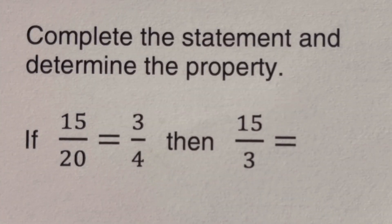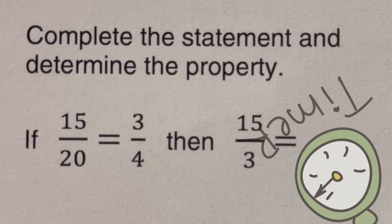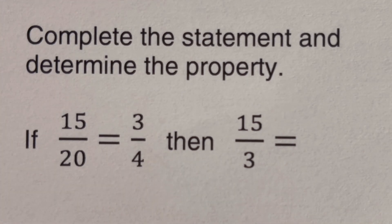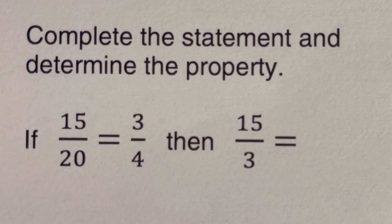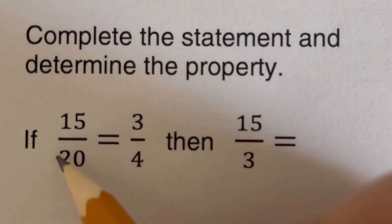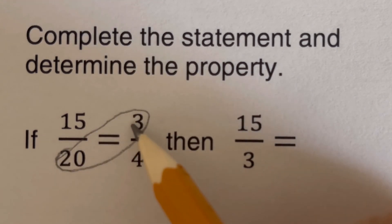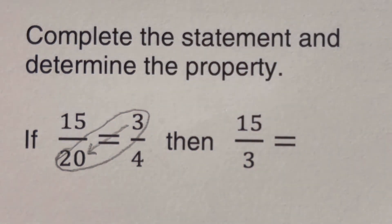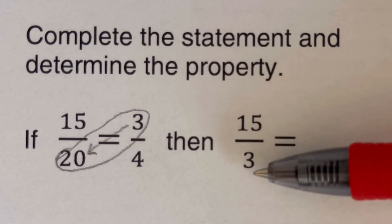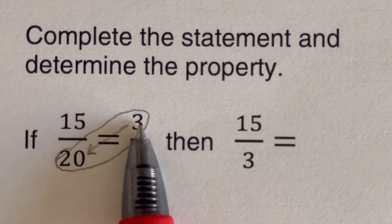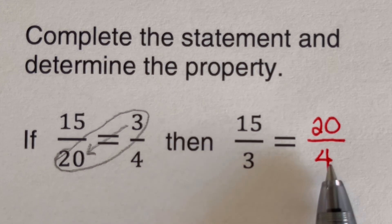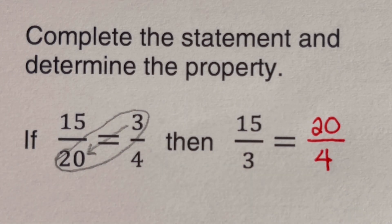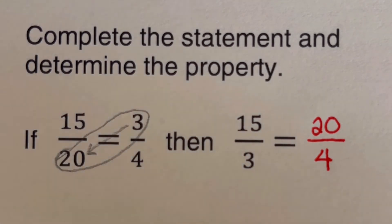Pause the video and try this problem on your own, then check your answer. We are given 15 over 20 equal to three over four, then 15 over three equals blank. Notice that the means were switched — three moved from the right side to the denominator on the left. This means 20 takes the place of three on the right, giving us 20 over four. This is the third property of proportion.